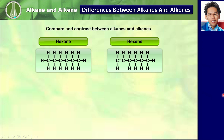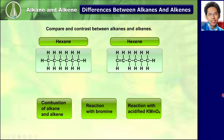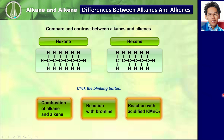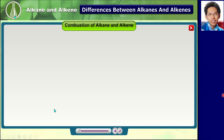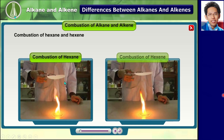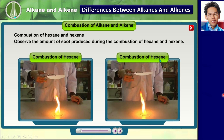Now let's compare and contrast between alkanes and alkenes. In the activity, hexane is used to represent an alkane and hexene is used to represent an alkene. Now we are going to see the difference in chemical properties. Let's look at the combustion of hexane and hexene — observe the amount of soot produced during the combustion of each.